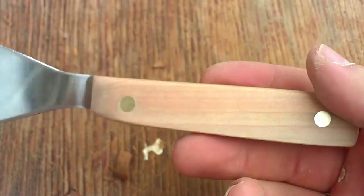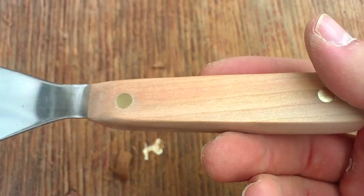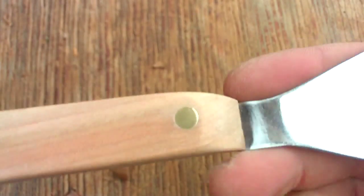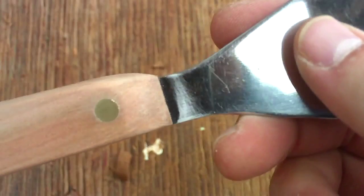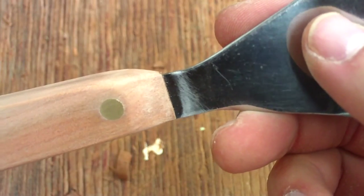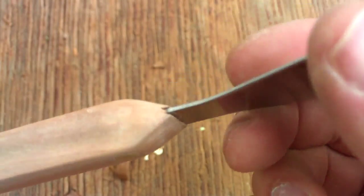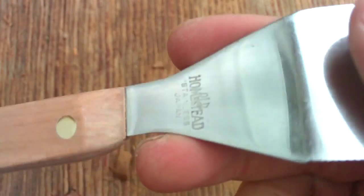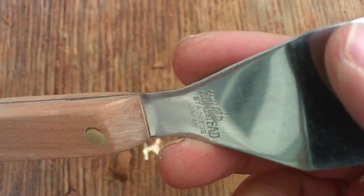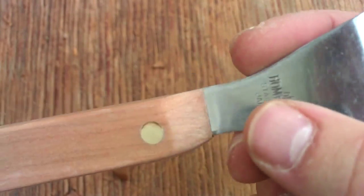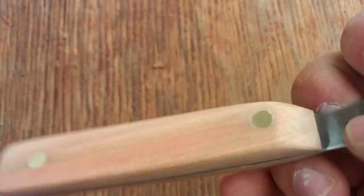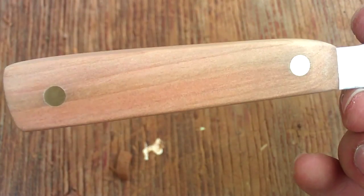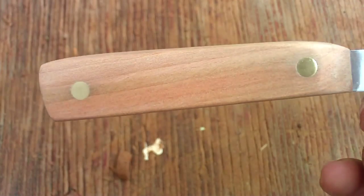Alright, so now after all the fine sanding, the handle's all shaped. We'll have to buff the spatula a little bit because I scuffed it up a little bit. Even with 1200 grit sandpaper, it still scuffs it up. So I'll just have to buff. I'll buff the metal and I'll buff the rest of the handle so it's prepared for oiling. So that's what's coming up next.